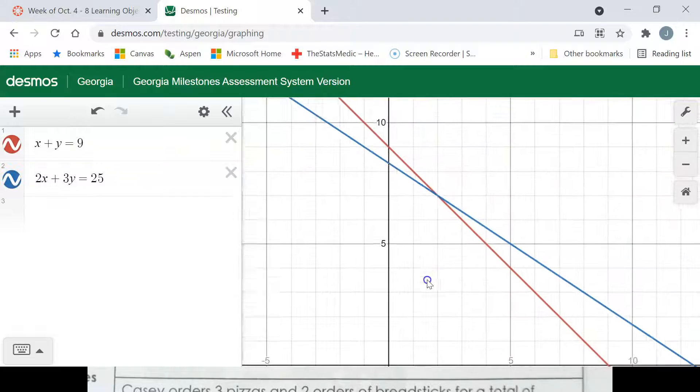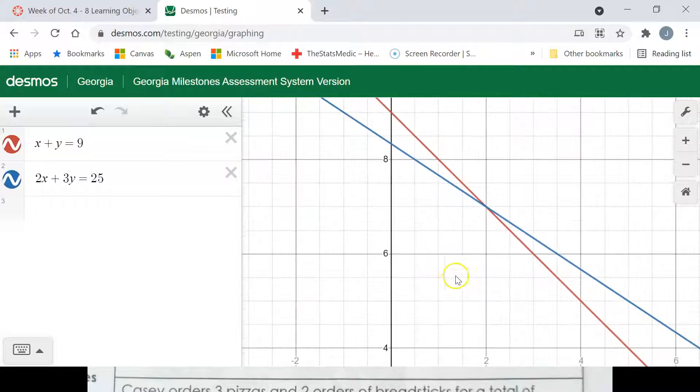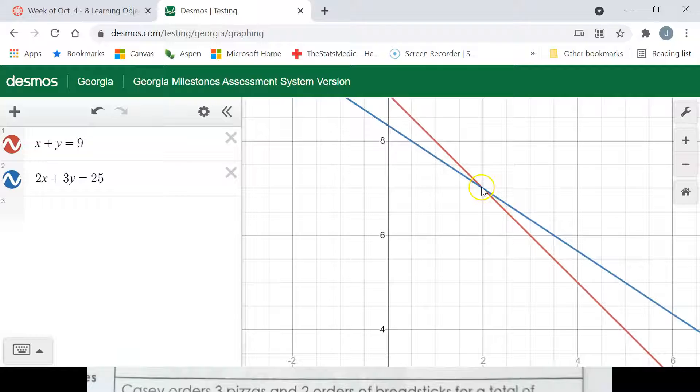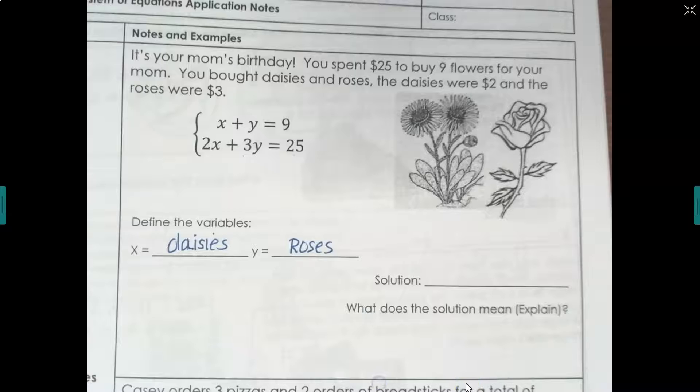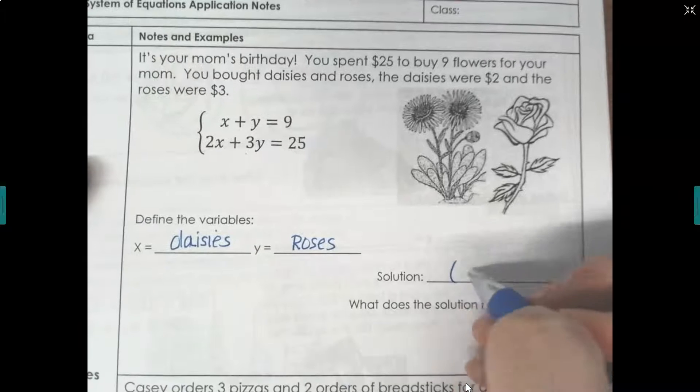I'm going to scroll in a little bit so we can see a little bit better. And here's where they cross and that is at 2, 7. Just like we were doing before, put the two equations in, see where it crosses. So this is what the solution is.